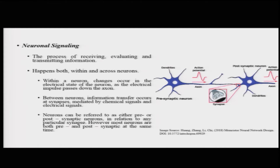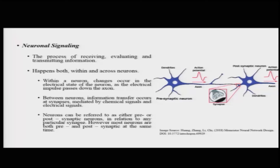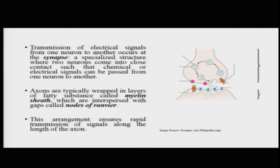This electrical activity also needs to be communicated with other neurons. When neuronal signaling happens between neurons, information or the signal transfers across at the synapse and is mediated by chemical and/or electrical signals. This is an example of chemical or electrical information exchange happening at the synapse between a couple of neurons.